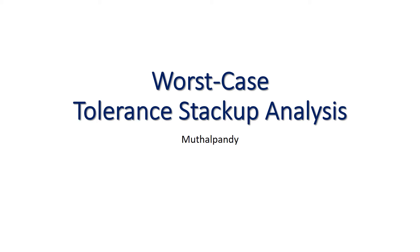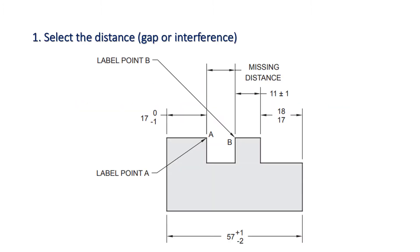Let us take a very simple first example in the tolerance stack-up analysis — it's a worst-case analysis. Let's start by selecting the missing distance — whether you desire a gap or interference as a functional requirement in your design. First, you select the distance of your interest where you want a gap or interference.